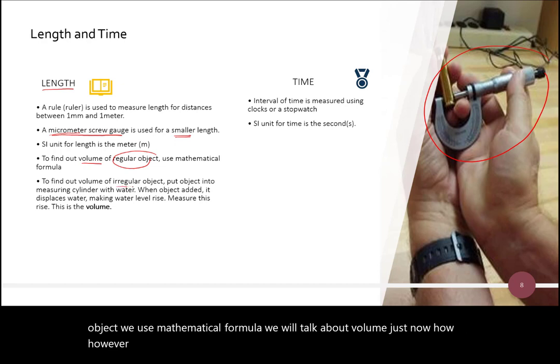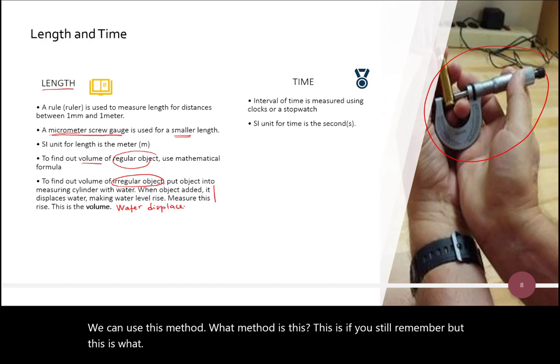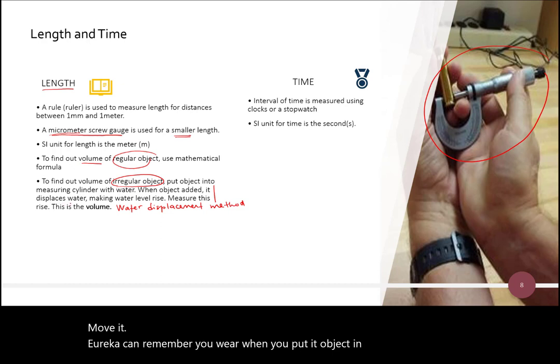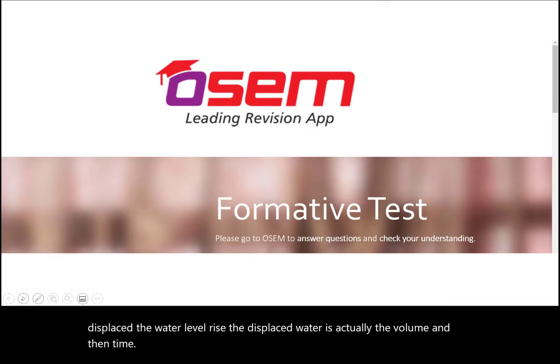However, if we have irregular object. Okay, we can use this method. So, what method is this? This is, if you still remember about this, this is water displacement method. Eureka can, remember? Okay, when you put an object in water, the water displaced. The water level rise. And the displaced water is actually the volume. Okay, and then time. Alright, so we are done with this lesson.